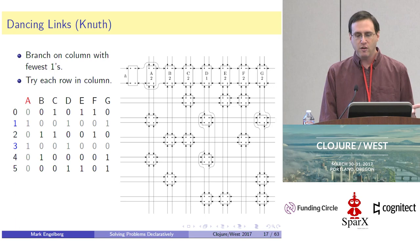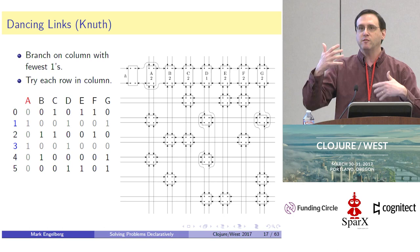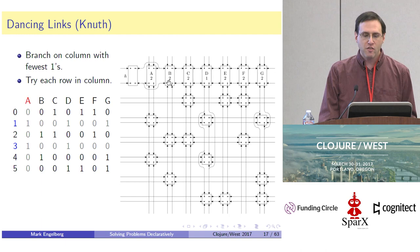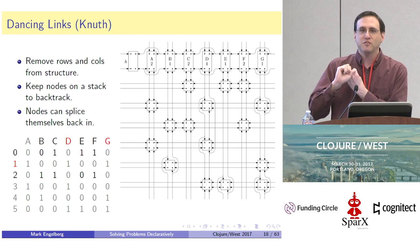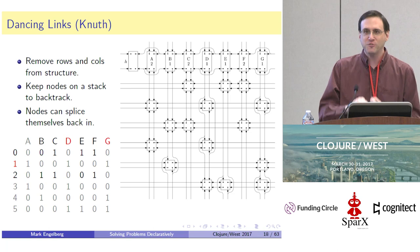The algorithm basically involves rerouting links around other nodes to temporarily make them invisible, then backtracking them very quickly. The main takeaway from looking at this is that this algorithm, to perform efficiently, relies heavily on doubly linked lists, mutation, and pointer manipulation.